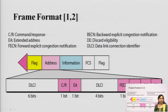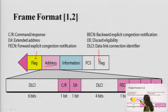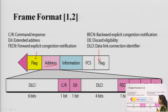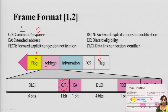The frame format used for Frame Relay includes a flag at the start and end of the frame to mark frame boundaries. The address information follows. C/R stands for command or response — if it is 1, the frame acts as a command from transmitter to receiver; if 0, it acts as a response from receiver to transmitter. EA is the extended address, used when additional information needs to be transmitted.